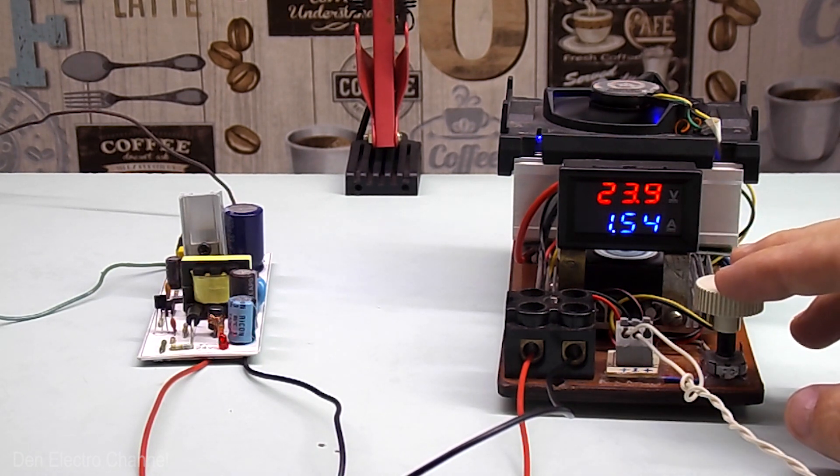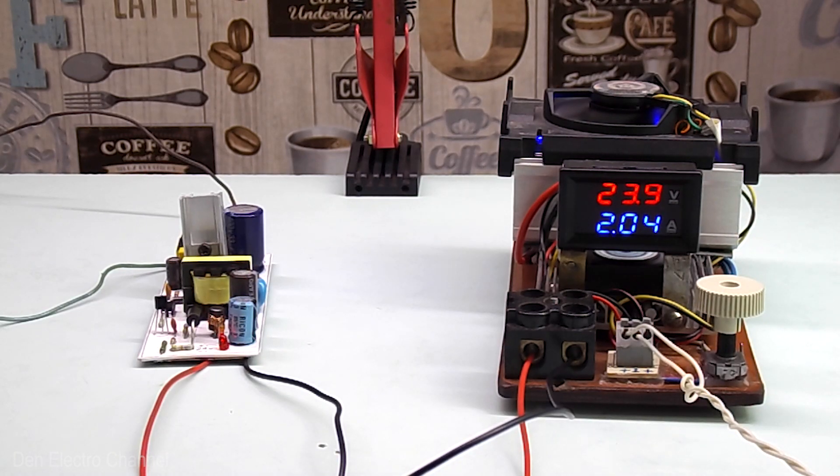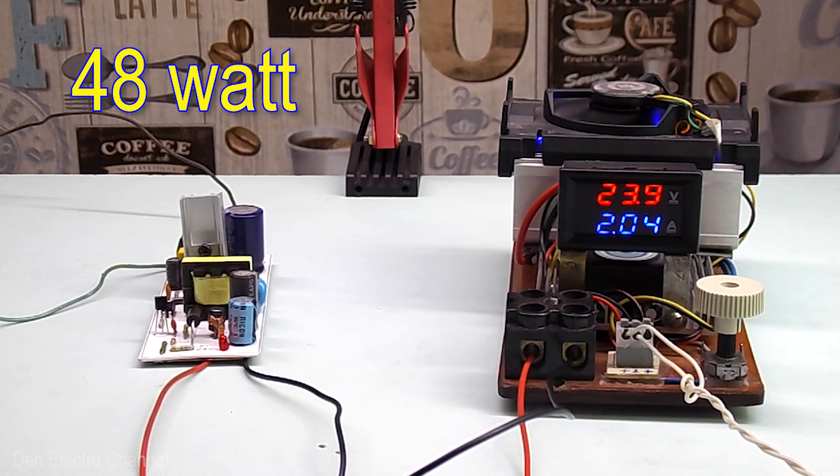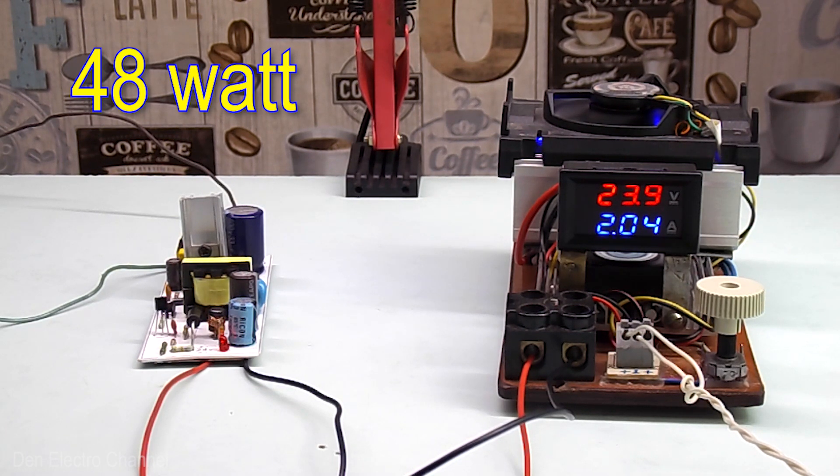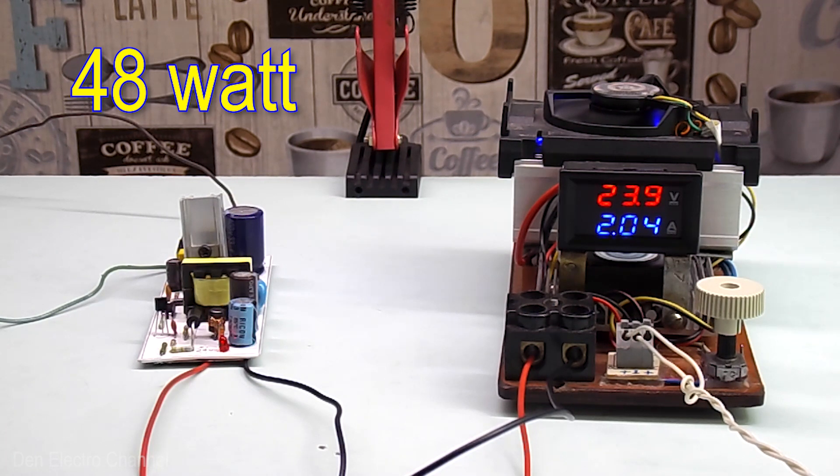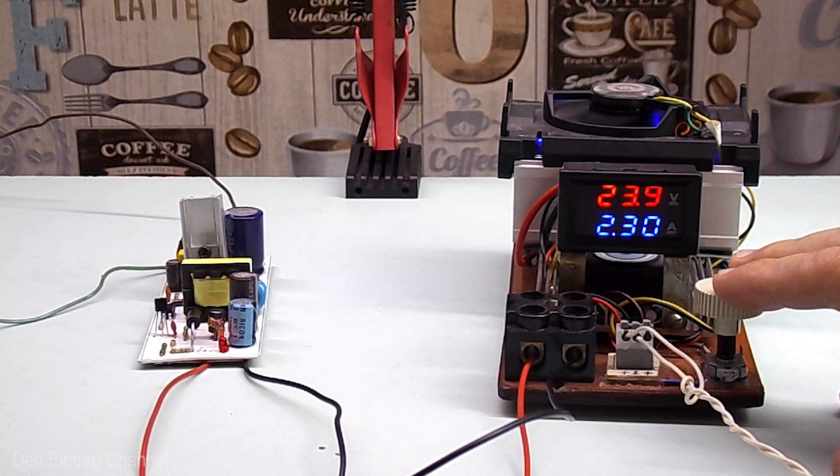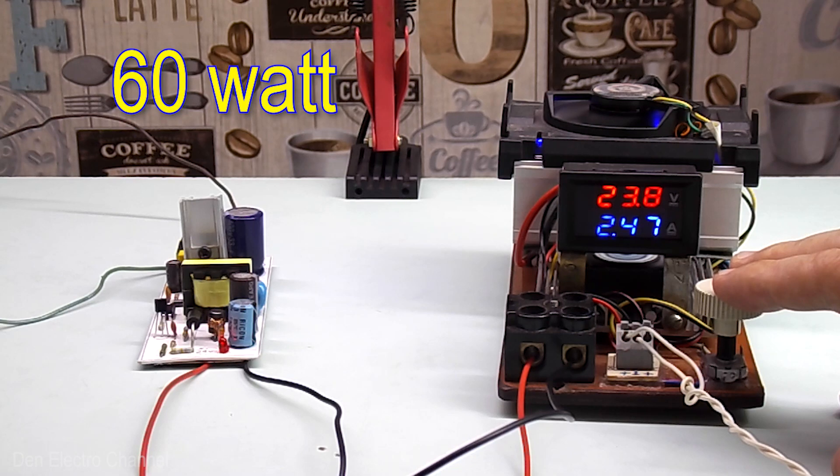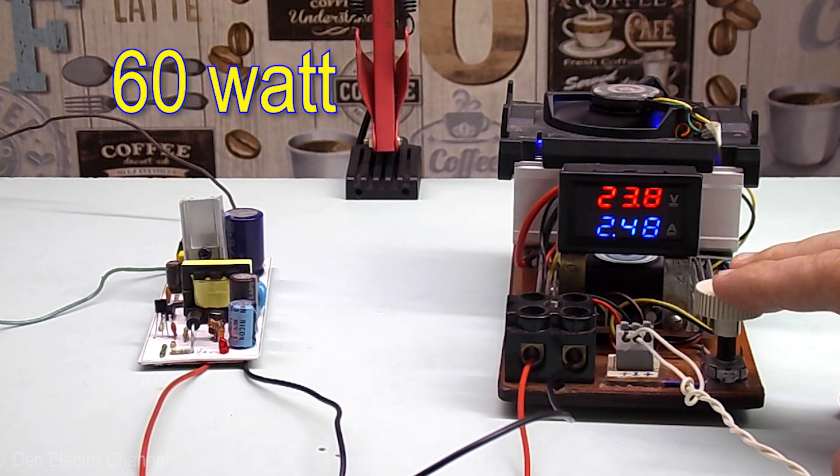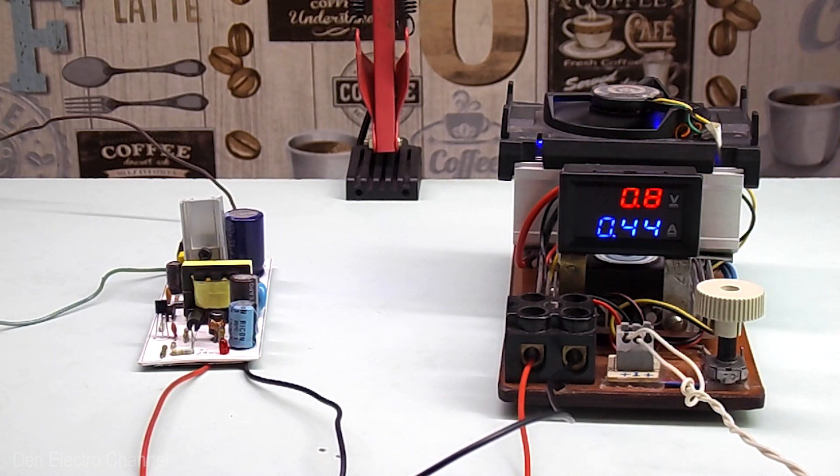I'll try to load the power supply even more and see what happens. The power supply also holds a current of 2 amperes perfectly. Power is almost 48 watts. I would like to note that the voltage stabilization is also quite good. There is no significant voltage drop at maximum power. I'll try to load more. Current 2.5 amperes, 60 watts. The load did not rise above this limit and the power supply went into protection.